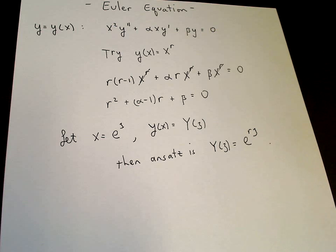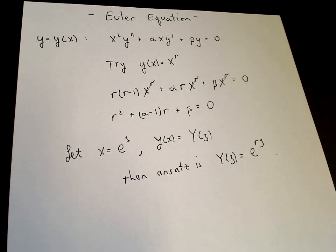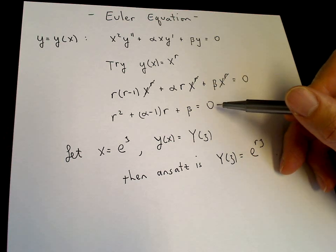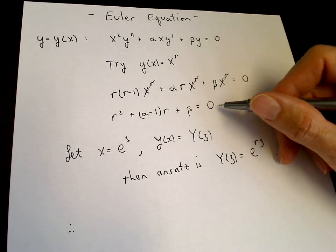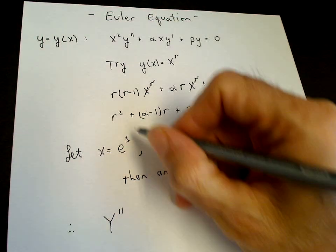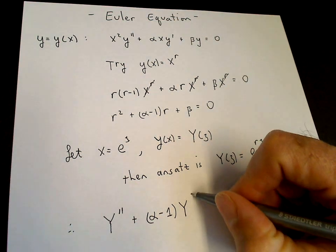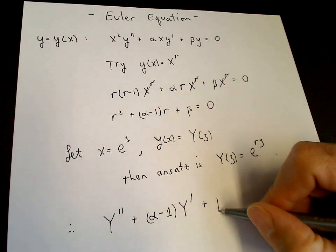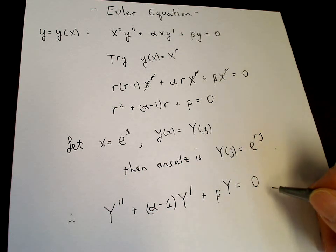That means that the solution of the Euler equation for capital Y is a solution of the constant coefficient equation, because we have an exponential solution. So what should be the equation for capital Y? The equation for capital Y should have this same characteristic equation as the Euler equation. The constant coefficient equation that has this characteristic equation is the one where capital Y double prime gives us r squared, plus alpha minus one times capital Y prime gives us alpha minus one times r, plus beta capital Y equals zero — where now the derivative is with respect to xi rather than with respect to x.